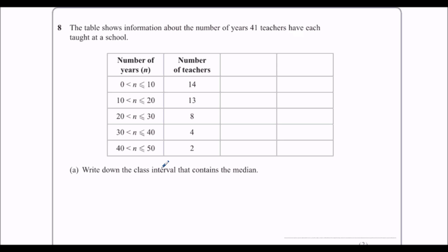So write down the class interval that contains the median. We've got 41 teachers, where's the middle? If I had 41 teachers and lined them all up, the middle would be the 21st teacher. There'll be 20 on either side and one in the middle, so the 21st teacher.